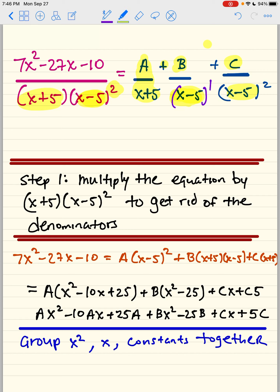So step one is we're going to multiply the equation by x plus 5 and x minus 5 squared to get rid of denominators. When we do that, we're going to have the left side, 7x squared minus 27x minus 10 to equal A times x minus 5 squared plus B times x plus 5 x minus 5 plus C times x plus 5.